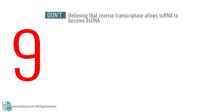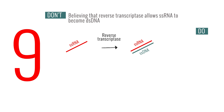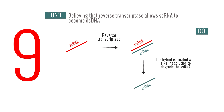Number 9: Believing that reverse transcriptase allows single-stranded RNA to become double-stranded DNA. Reverse transcriptase synthesizes a single-stranded DNA which is complementary to the single-stranded RNA. The hybrid has to be treated with alkaline solution to degrade the single-stranded RNA. Then, DNA polymerase is used to synthesize another strand of DNA to produce the double-stranded DNA.